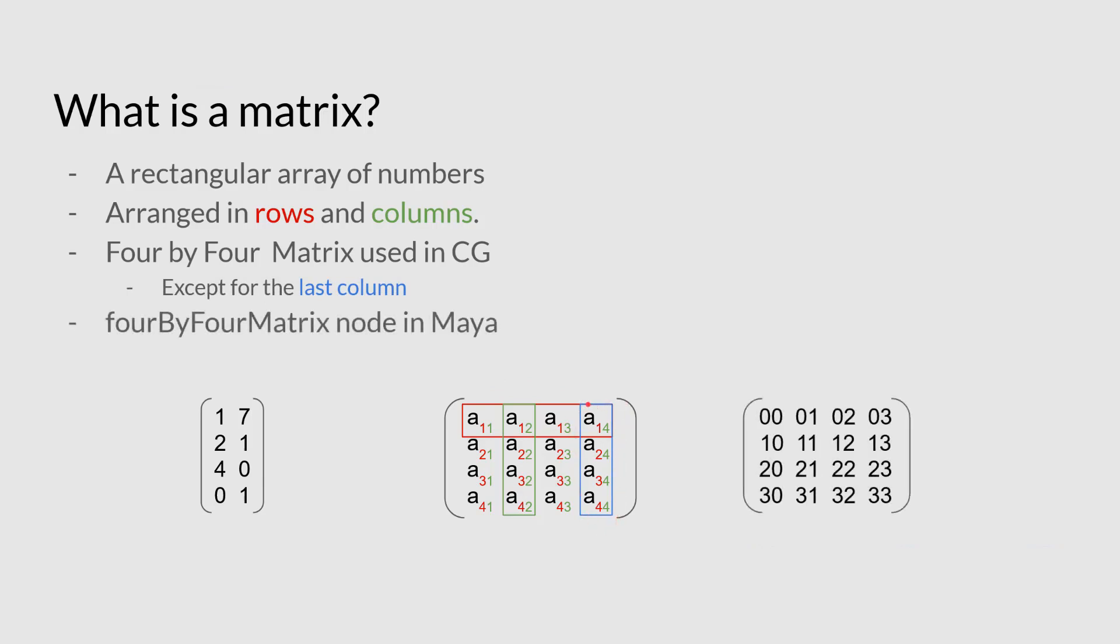In Maya you will see the 4x4 matrix node, which is not really laid out in this array here. It's more in a long list of numbers where you will see 0 0, 0 1, 0 2, 0 3, and then 1 0, 1 1, 1 2, 1 3.